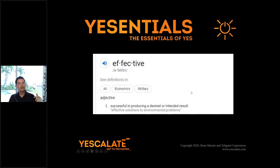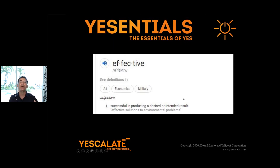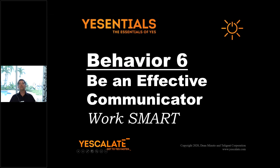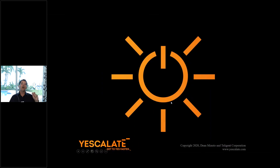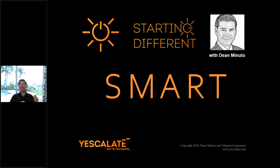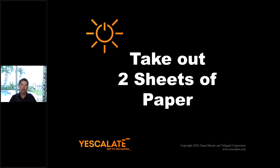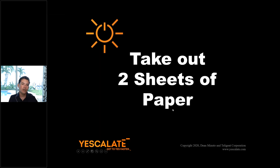Behavior six is around effective communication. Effective means producing the desired or intended result — in other words, getting to what you want to get to. I'm going to share a tool and go through those two biases. I'd like you to take out two blank sheets of paper: on one, I'm going to have you draw a GPS tool you can use in your interactions; on the other, I'll go through supply and motion with specific tips you and your team can apply this week.